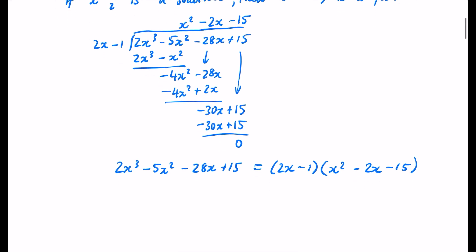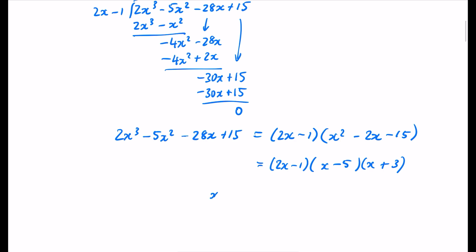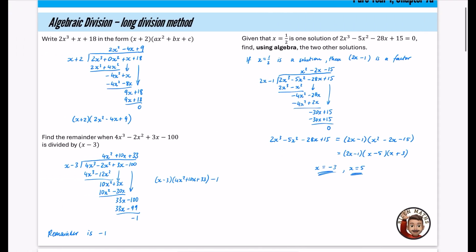So we can write 2x³ minus 5x² minus 28x plus 15 as (2x minus 1)(x² minus 2x minus 15). Now factorize the quadratic: it's going to be (x minus 5)(x plus 3). So the two other roots are x equals minus 3 and x equals 5. All three solutions are x equals one half, x equals minus 3, and x equals 5.